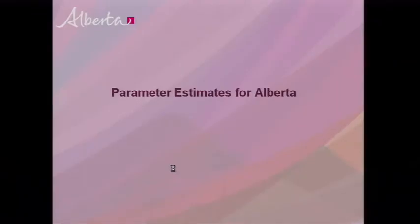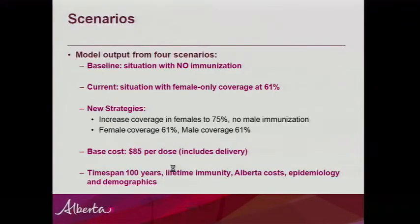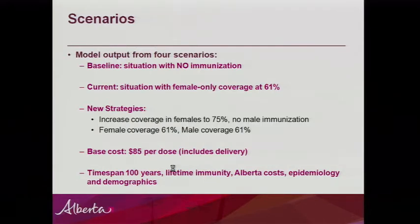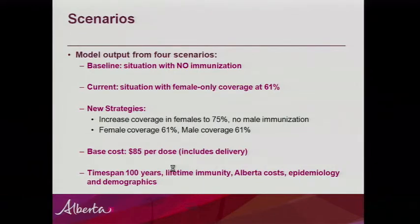The model outputs four scenarios: a baseline with no immunization before any program; the current scenario with female-only coverage at 61%; a comparator increasing female coverage to 75% with no male immunization; and a second comparator keeping female coverage at 61% and introducing males at the same coverage level. Regarding the 75% ceiling — a survey asked parents whether they'd immunize their child: 50% said yes absolutely, 25% said no, and 25% said maybe. Taking those numbers as given, 75% is a pretty high ceiling on expected coverage.